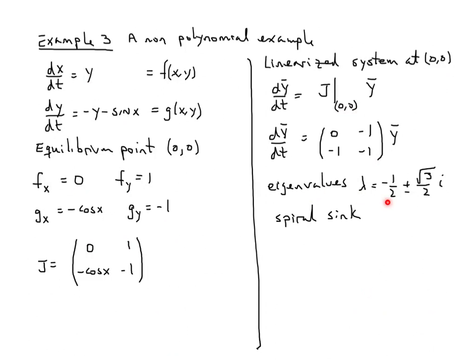Easy to compute our eigenvalues—again, complex but with a negative real part—and so we know we have a spiral sink.